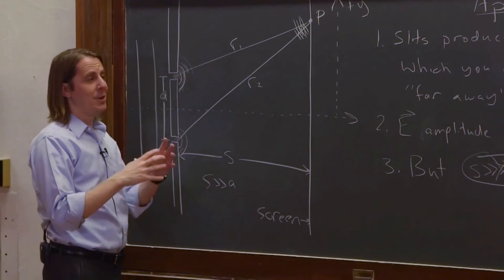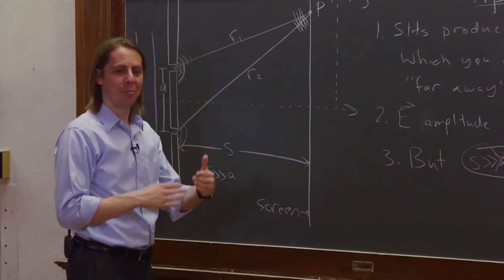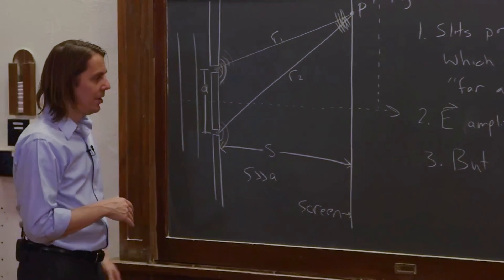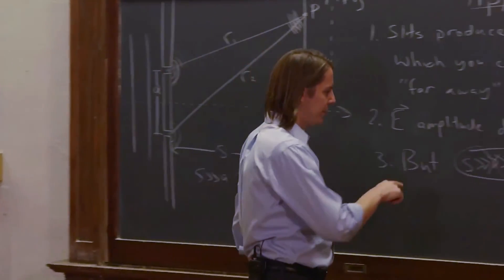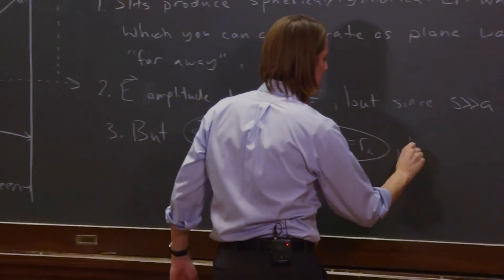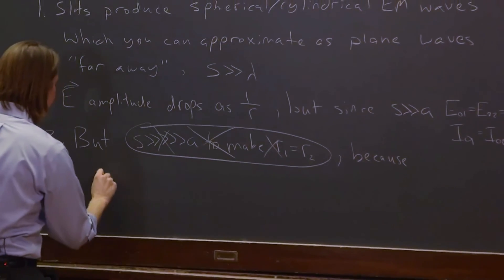So sometimes you make an approximation, but you don't go all the way with it. You only partially approximate. And that's just sort of how it is. So this is not true because we would lose interference.